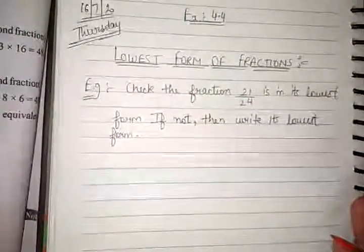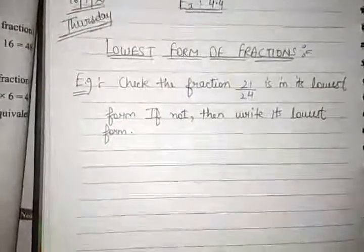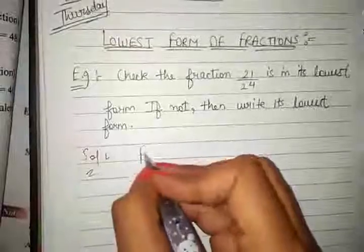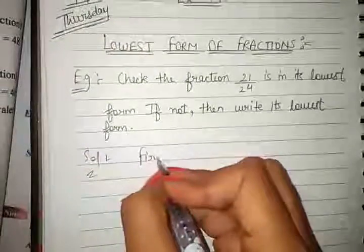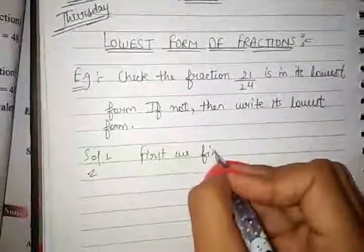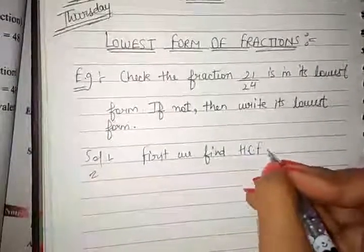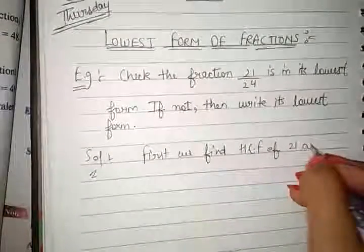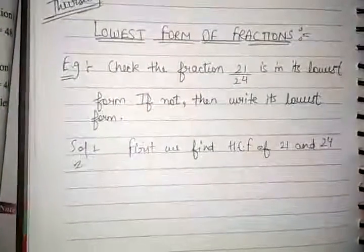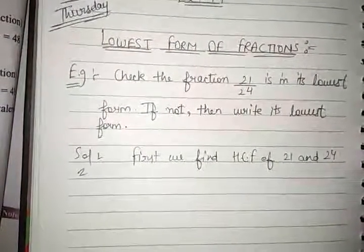We will find the Highest Common Factor, HCF, of 21 and 24. HCF of 21 and 24 can be found using any method.